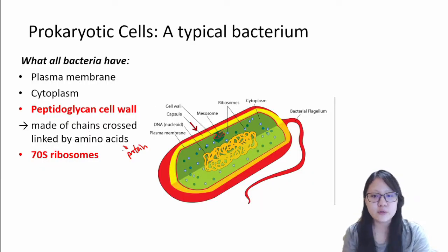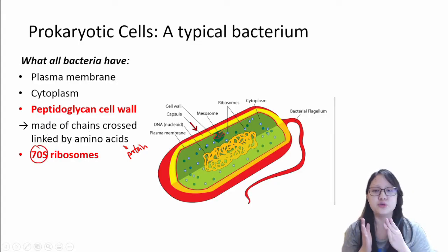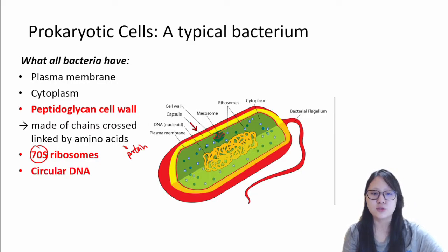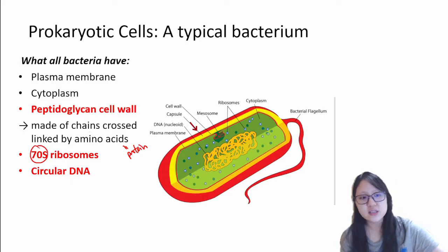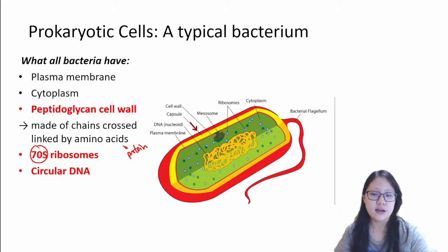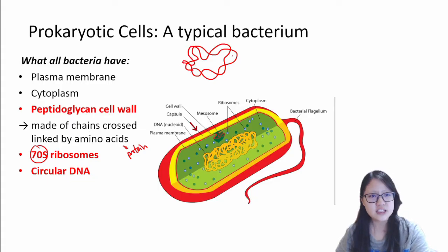Now, what do they also have? They also have 70S ribosomes, not 80S. 80S ribosomes are only found in eukaryotes. Bacteria has 70S ribosomes. They also have circular DNA. Circular DNA is also double helix, but it comes back to itself — it comes back and joins back to itself.